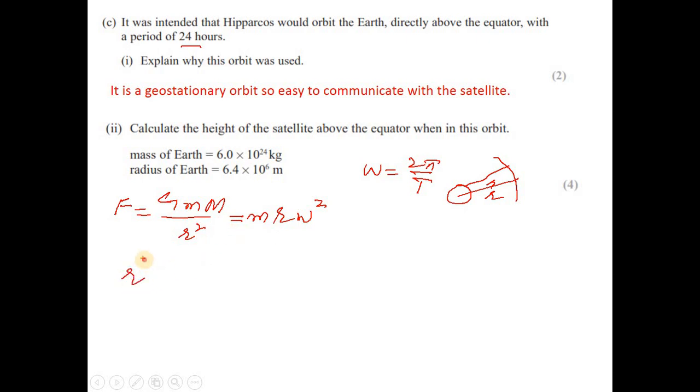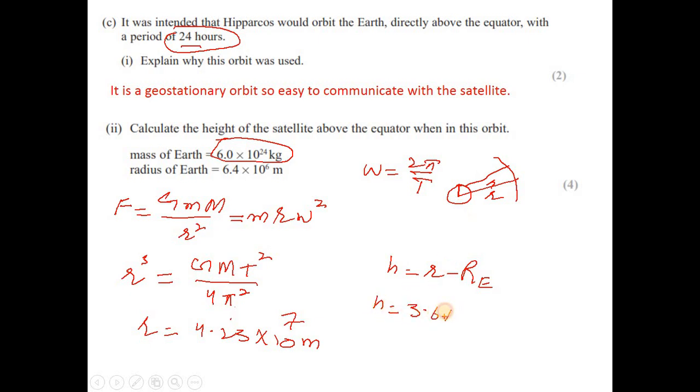And you can substitute all the values. G is universal gravitational constant. From your data sheet or formula sheet, you can find value of g and mass of the earth, which is this. And t is the time period 24 hours and 4 pi square. And you can find r from here. If you find r, this r would be equal to 4.23 into 10 to the power 7 meter. But we need to find the height and the height h would be equal to r minus radius of the earth. And this is the radius of the earth here. So h would be equal to 3.6 into 10 to the power 7 meter.